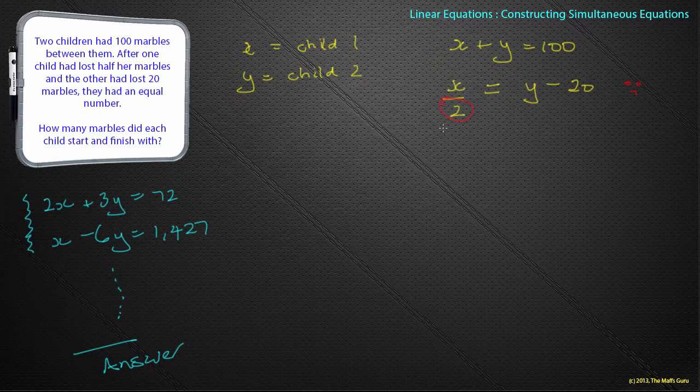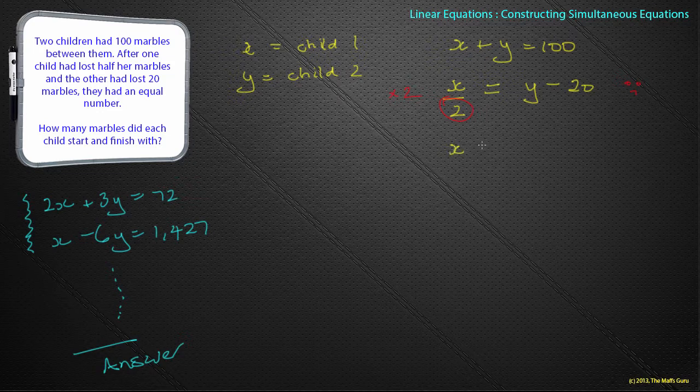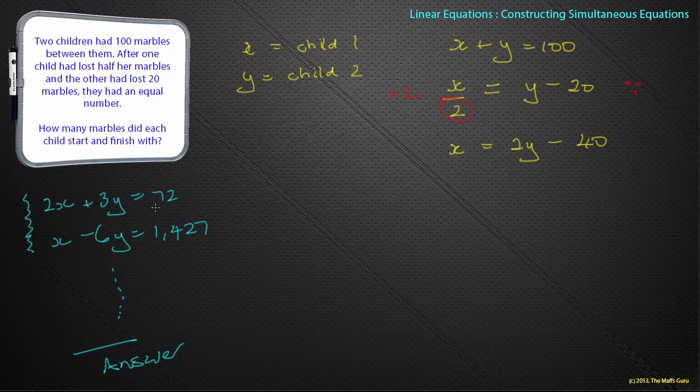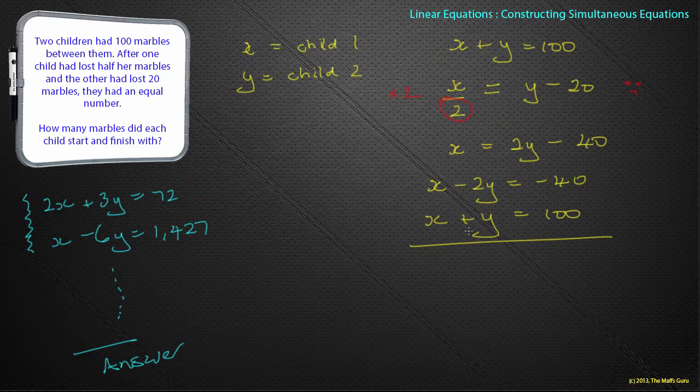Well, we don't like a divide by 2. So what do I do to get rid of that divide by 2? I multiply absolutely everything by 2, which leaves X equals 2Y minus 40. Well, hold on a moment. That still doesn't look like the form we want, because remember, we want X's and Y's on one side and numbers on the other. Well, we can do that. We can move the 2Y over to the other side and get X minus 2Y equals minus 40, which, when we compare that with X plus Y equals 100, gives me my simultaneous equation.